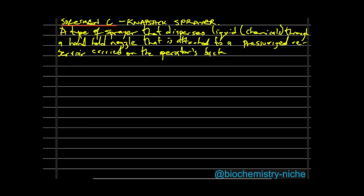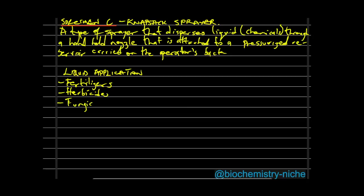The knapsack sprayer is used to apply liquids such as fertilizers (in liquid form), herbicides to kill unwanted weeds, fungicides, and pesticides. It is particularly suited to spot-treating specific areas on a field.